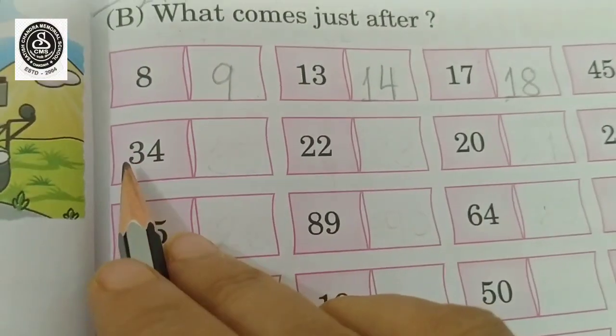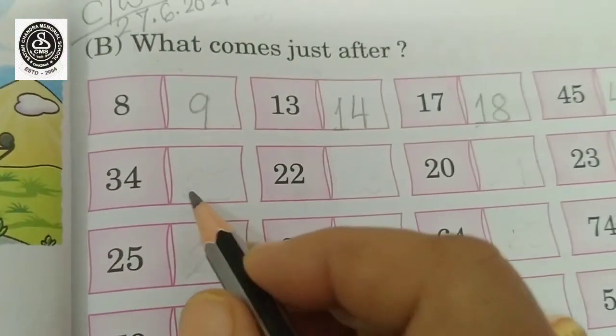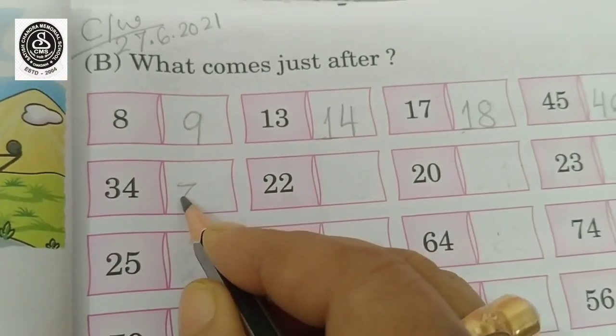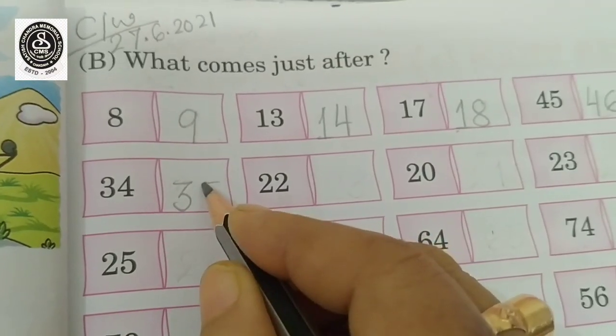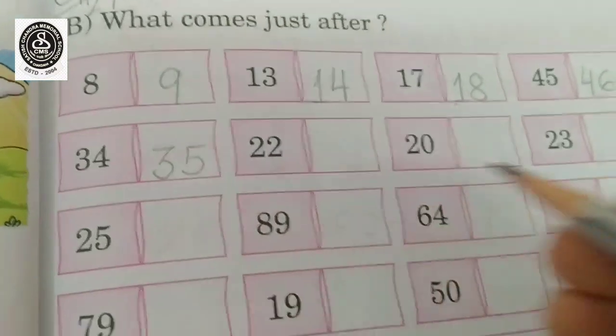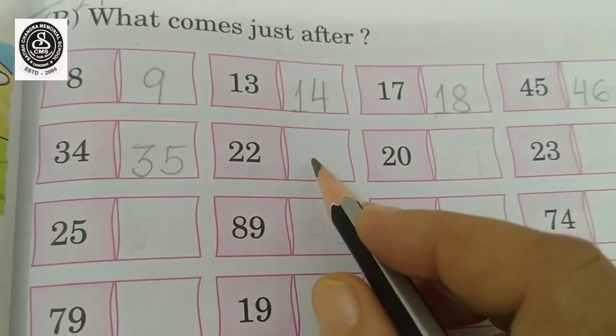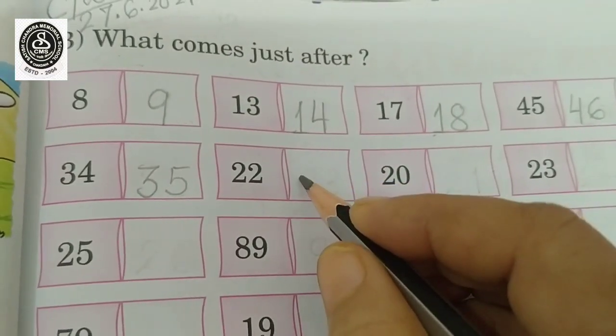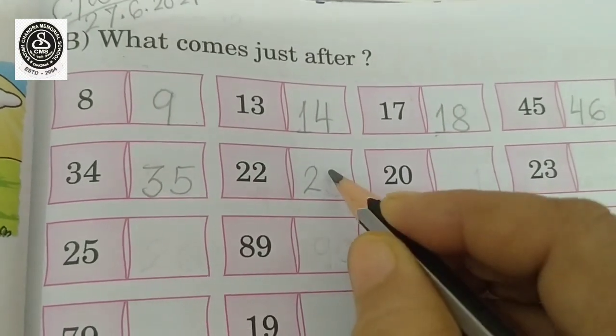What comes after 34? 35. What comes after 22? 23.